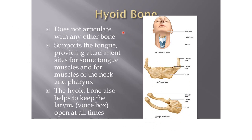The hyoid bone is the smallest bone present in the throat. It does not articulate with any other bone. It provides an attachment site for some tongue muscles and for muscles of the neck and pharynx.